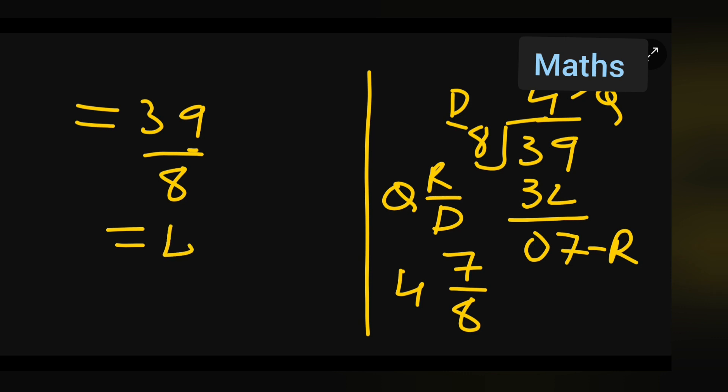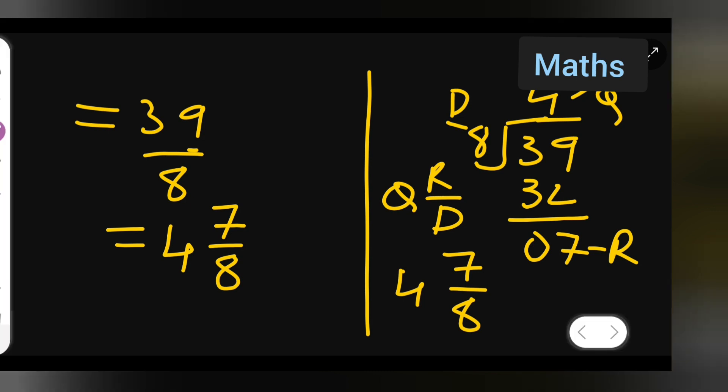So what will be your answer? 4 and 7 upon 8. If y'all want to write in mixed fraction. So this is the way how you all have to add this. If you all want to write simple form write it or in a mixed fraction also you can write it. So I hope you all have understood and thanks for watching if any doubts queries you all can comment below.